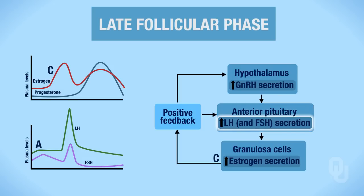So where are we on our graph now? LH is illustrated on the diagram with D as in dog—that spike of LH surge we're seeing here. FSH secretion also shows a little spike, labeled with an E. So that explains what's causing these spikes.